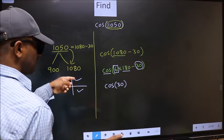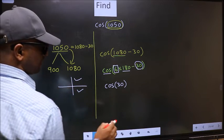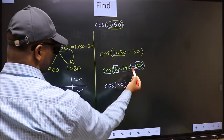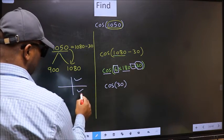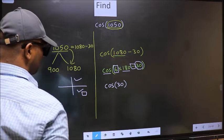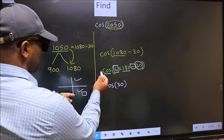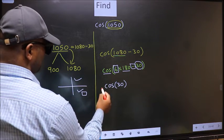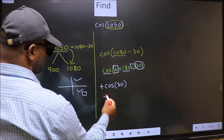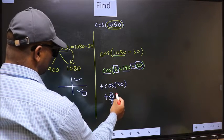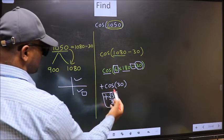So now to select the quadrant, we should look at this symbol. Here we have negative. That means the angle lies in the fourth quadrant. And in the fourth quadrant, cos is positive. So we should put plus. So plus cos(30°) is √3/2. This is our answer.